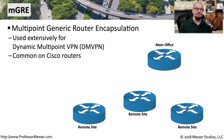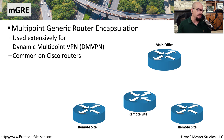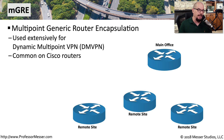Within MPLS, we have to create an initial configuration that defines where all the different sites are located and what labels are used to switch data to those locations. Other types of wide area networks can create network connections dynamically, so you're only connecting to sites when you need to. This commonly uses MGRE — Multipoint Generic Router Encapsulation — and you'll usually see networks like a dynamic multipoint VPN, or DMVPN, used to send data across one of these MGRE networks.